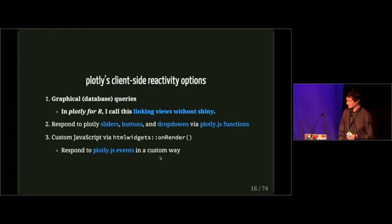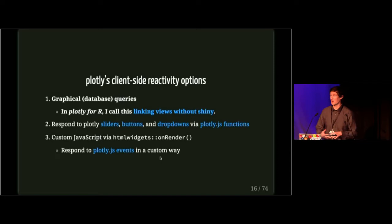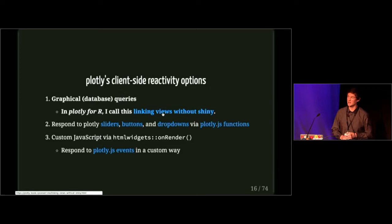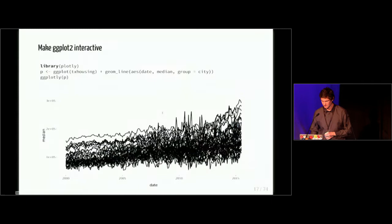There are three main categories in terms of how you can add non-default reactivity to your plotly graphs that will work in a client-side fashion. Most of our time is going to be spent on this first part — a framework that some people call graphical database queries. This has existed in other interactive graphics software in the past, and if you're familiar with the plotly for R book, I have a chapter called 'linking views without Shiny.'